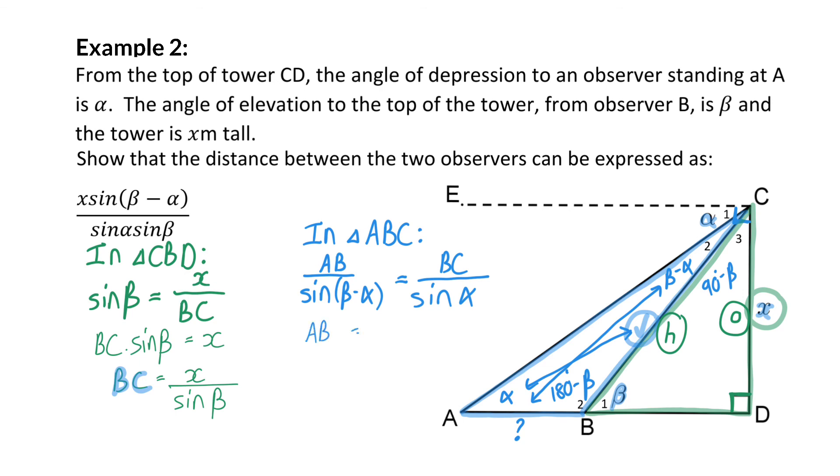To solve AB I'm going to multiply with the sin of beta minus alpha on the right-hand side, and now we can substitute the abstract value for BC that we calculated earlier. So AB will be BC which is x over sin beta multiplied by sin of beta minus alpha divided by sin of alpha. And here we've proven that that ratio is the distance between the two observers.